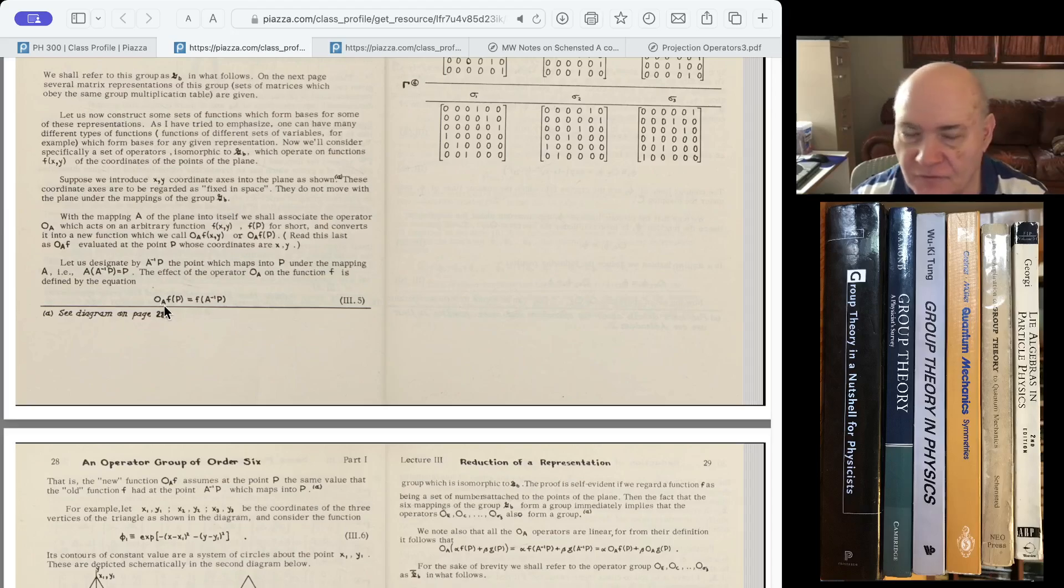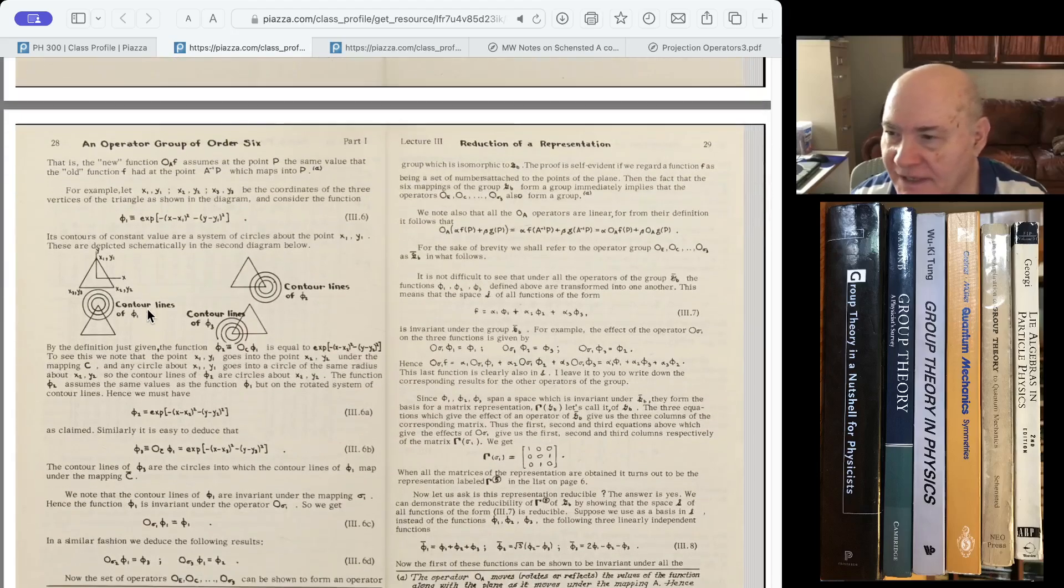Basically, A is a group element. O is just the kind of operator we're talking about right now. And it acts on a function. The crucial thing is it doesn't act on points, it acts on functions. But from this notation, you might not see that clearly. It's defined by OA f acting on a point P is the function F acting on where the point came from before the symmetry group operator was applied, A inverse P. And so she gives an example like here.